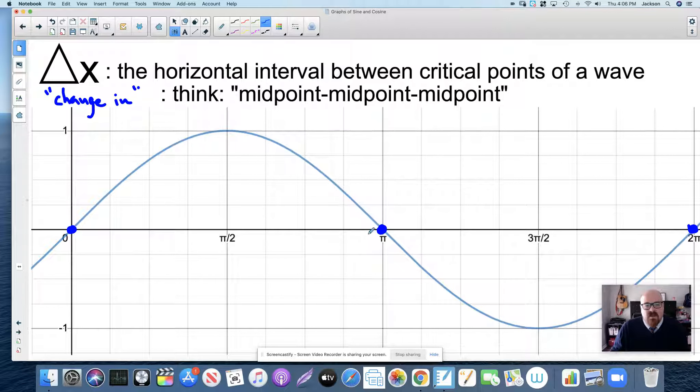In between these two intercepts, or what we might call the first and third critical point, there's another midpoint here where the maximum occurs. And then in between the end point of the period and the midpoint of the period, the midpoint of those midpoints, endpoint and midpoint, is the minimum.